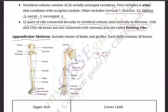The forelimb has: radius and ulna in the lower arm, 8 carpals at the wrist, 5 metacarpals in the palm, and 14 phalanges — the bones in the fingers, also called digits. So each forelimb contains these bones collectively making up the 30 bones of the limb.